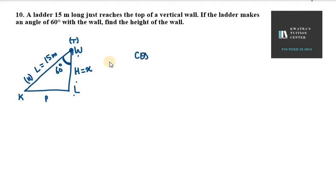So here, base and hypotenuse is the relation of cos. If you know the formula, it is base over hypotenuse. So B over H, or you can write it as WL over WK. So WL is your base, WK is your hypotenuse.